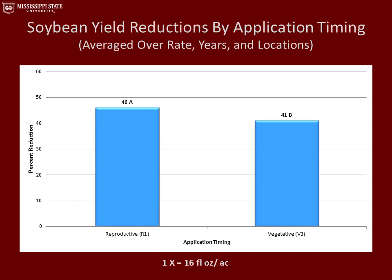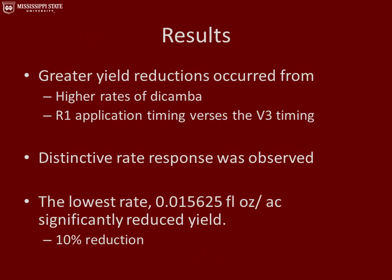This graph represents soybean yield reductions by application timing, averaged over all rates, years, and locations. Treatments that received the application in the R1 growth stage had a 46% yield reduction, and those in the vegetative growth stage had a 41% yield reduction. We saw greater yield reductions from higher rates of dicamba as well as from the R1 application timing versus the V3. A distinctive stair-step rate response was observed, and even with the lowest rate, the 1/1024x rate, we still saw significantly reduced yields of 10%.